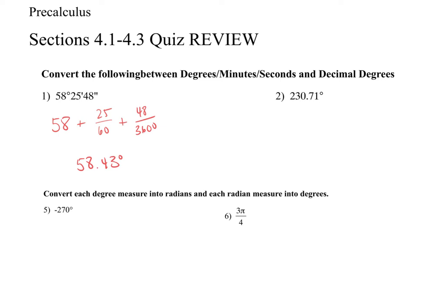When you're going the other direction you multiply. Take 0.71 and multiply by 60 — you'll get a number with a decimal place. When you get 42.6, the 42 is your minutes, so 230 degrees 42 minutes. Then to find your seconds, take that 0.6 and multiply by 60 again. So: minutes/seconds to degrees — divide; decimal degrees to minutes/seconds — multiply in steps.